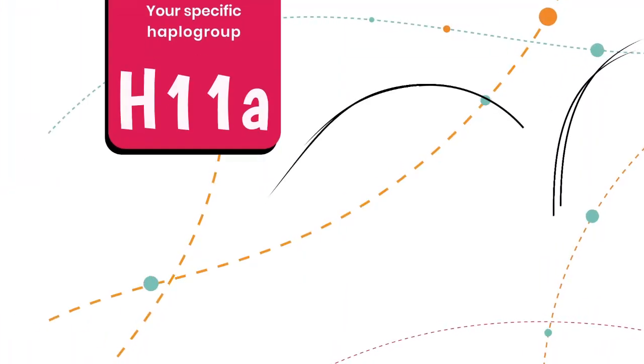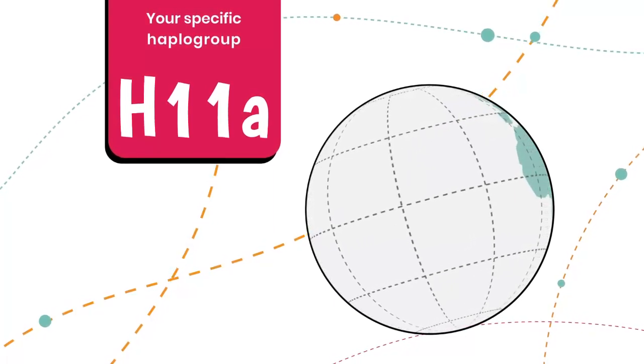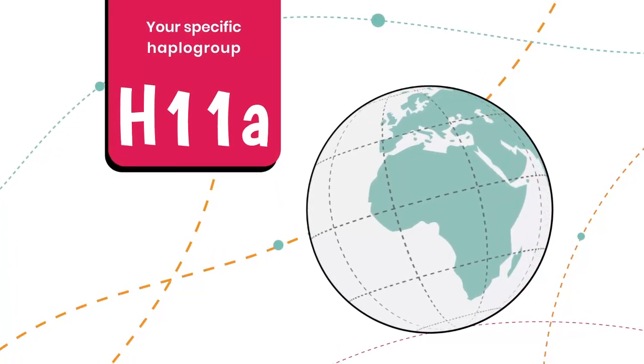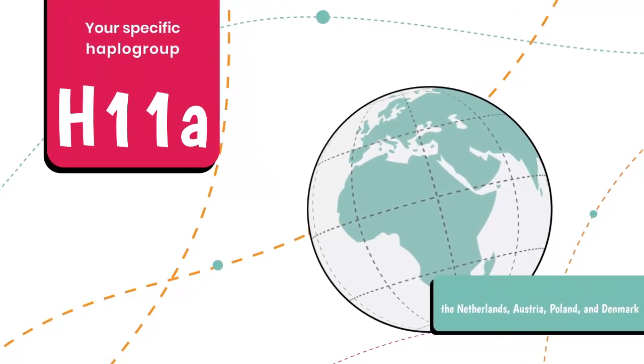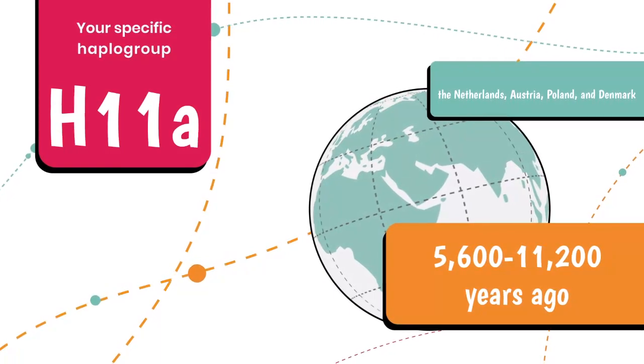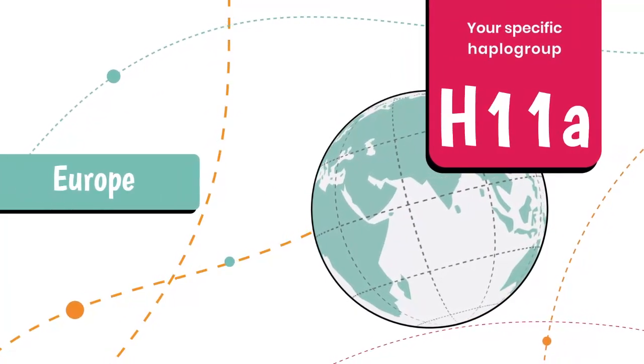Your most refined haplogroup, H11A, represents part of this repopulation of Europe. Your haplogroup is found in its highest frequency in the Netherlands, Austria, Poland, and Denmark and formed approximately 5,600 to 11,200 years ago. H11A is also seen in lower rates throughout Europe.